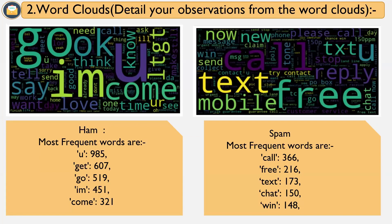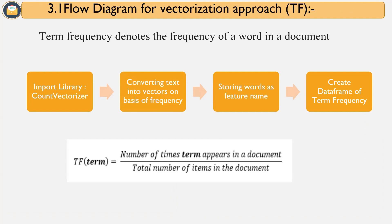The most common words in spam messages can be identified by the largest words in the word cloud. For example, in a word cloud of ham messages we can see words like 'I', 'am', 'come', 'you' — words we usually use in daily personal communication. On the other hand, a word cloud of spam messages shows words like 'free', 'text', 'chat', 'win', 'guarantee'. We use these words as features to train the model.